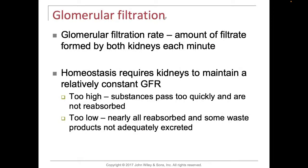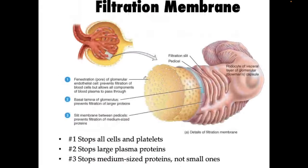In terms of the glomerular filtration rate, that's the amount of filtrate formed by both kidneys each minute. Homeostasis requires the kidneys to maintain a relatively constant glomerular filtration rate, or GFR. If it's too high, substances pass too quickly and are not reabsorbed. If the glomerular filtration is too low, nearly all is reabsorbed and some waste products are not adequately excreted. So maintaining a constant GFR is pretty important.